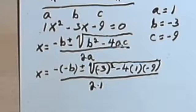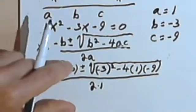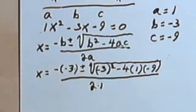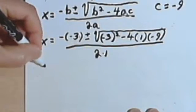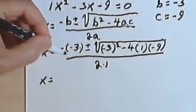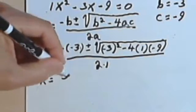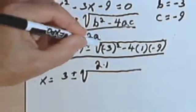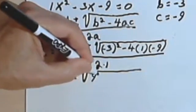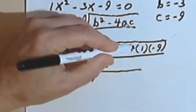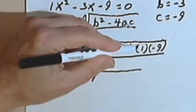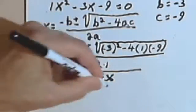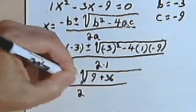And now the only thing left to do is just do the math for all of this. So here we go. x = -(-3) is a positive 3, plus or minus the square root of (-3)² is 9, minus 4 times 1 is -4, -4 times -9 is positive 36, and this is going to be over 2.